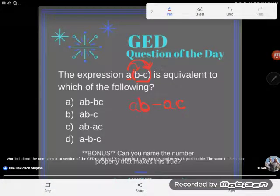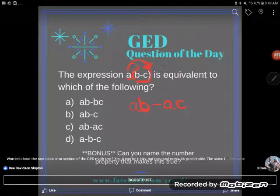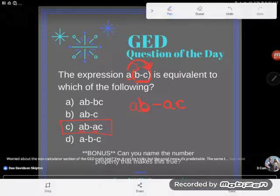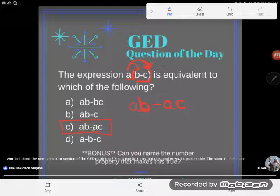And so, even though I have no idea what a, b, or c are, I know that I can just pass this a out. And so the correct answer then is c: ab minus ac. Notice, both of the expressions that were, or both of the terms, I should say, the b and the c, that were in the parenthesis ended up getting an a passed out to them.